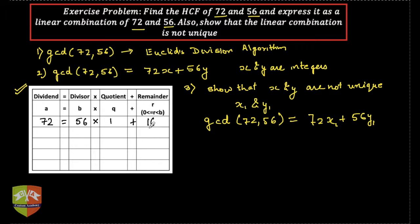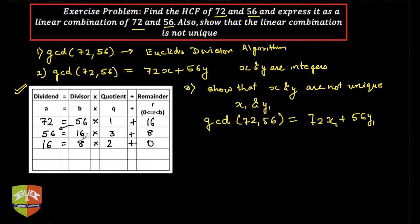The previous b becomes a in the next step, so we write 56 in the a column and the remainder 16 in the b column. Now 16 goes 3 times into 56 since 16 × 3 = 48, and 48 + 8 = 56, so the remainder is 8. The remainder is not 0, so we continue. Next, 16 goes into a column and the previous remainder 8 goes into b. Since 8 × 2 = 16, the remainder is 0.